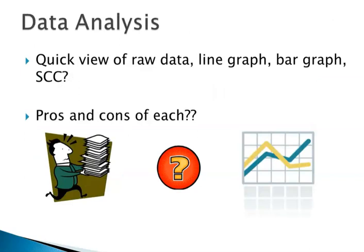When we get into data analysis, we're going to discuss a quick review of raw data, line graph, bar graph, and standard acceleration chart. I want you to think about the pros and cons of each. If any of you have used a bar graph or pie chart before, what are the pros and cons? For those who have used line graphs, why do you use them? And for those who have had experience with a standard acceleration chart, what are the pros and cons? Please pause and think this through.